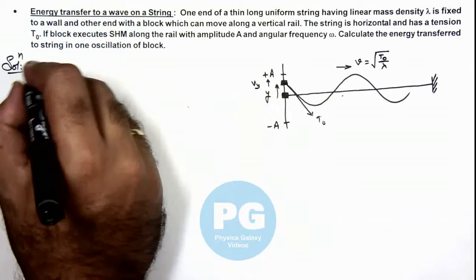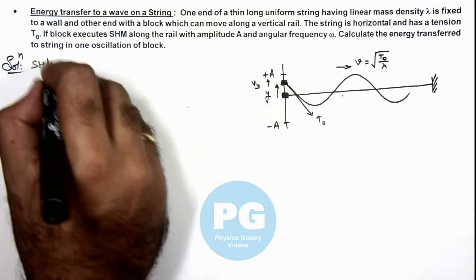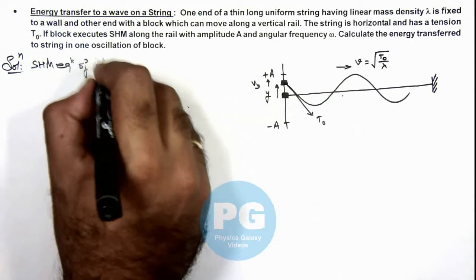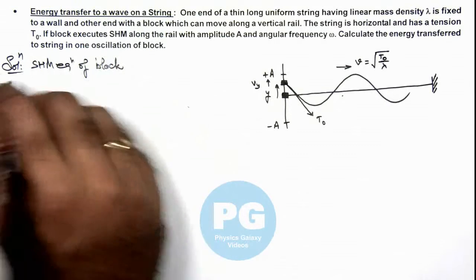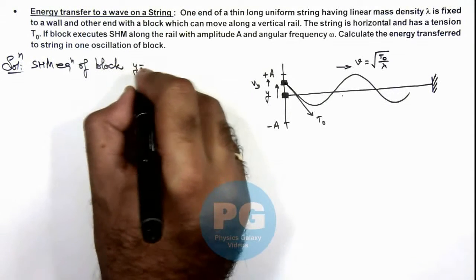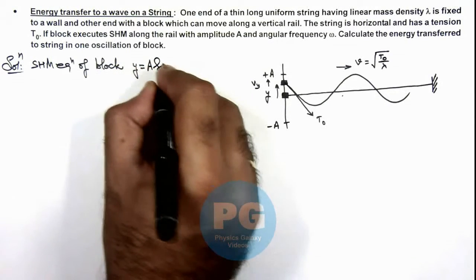So if we write down the SHM equation of the block, this equation we can write as y = A sin(ωt).